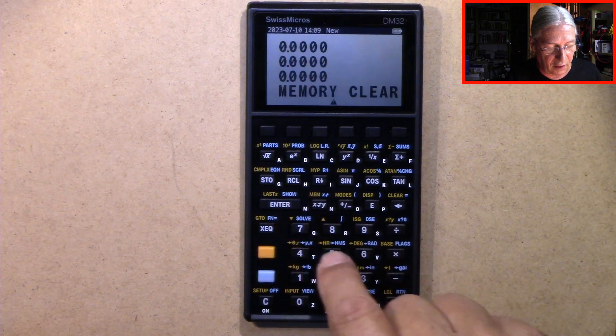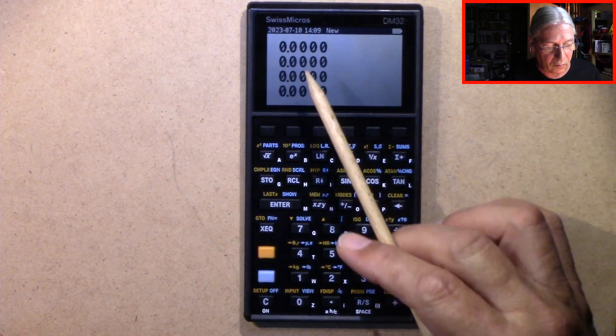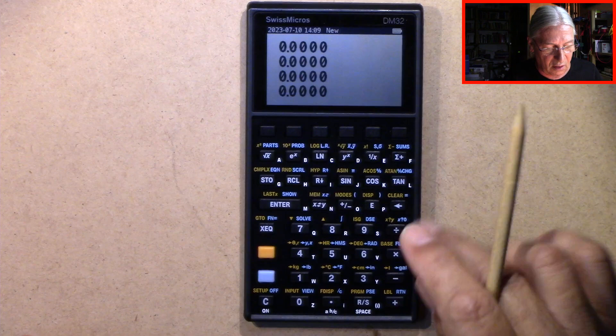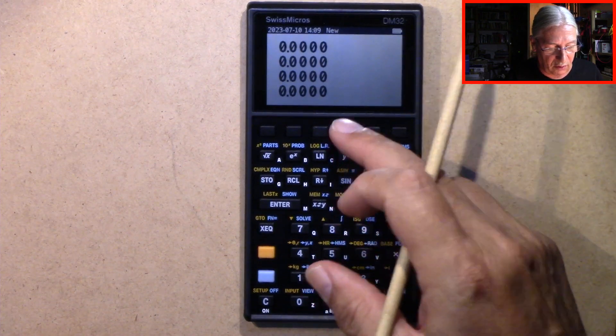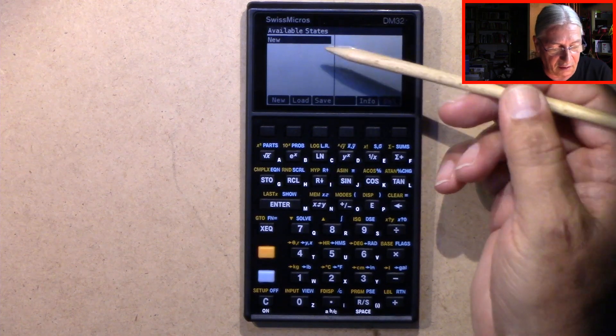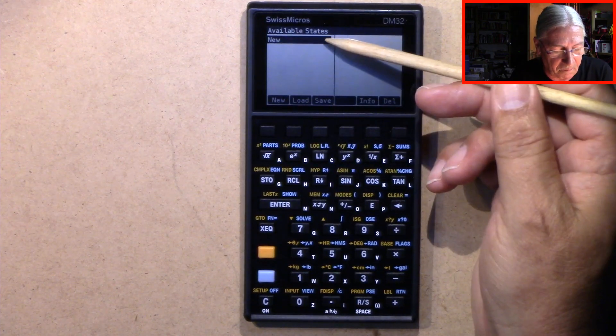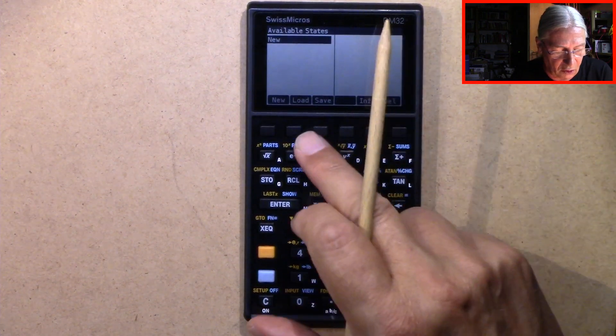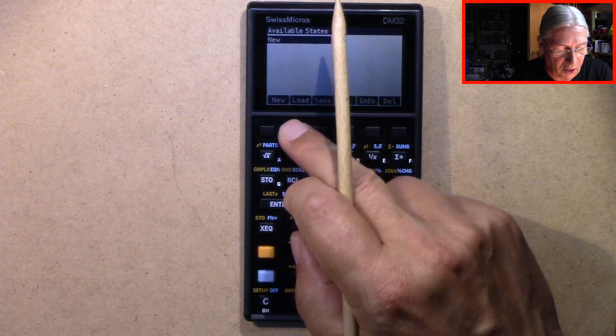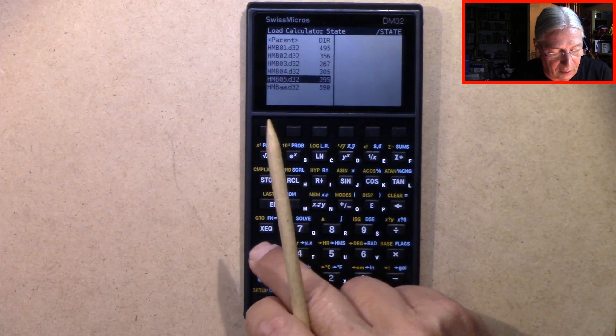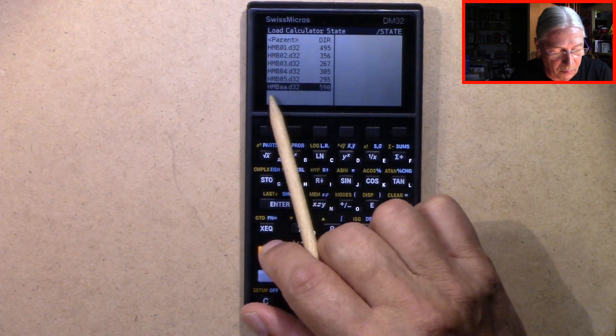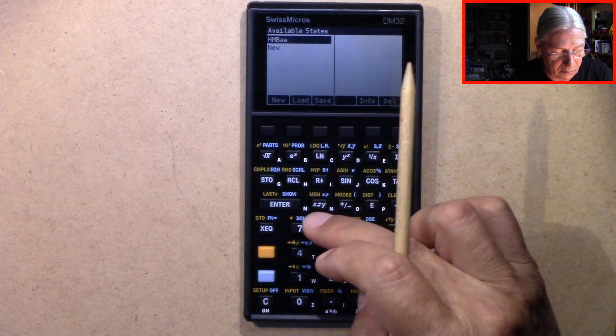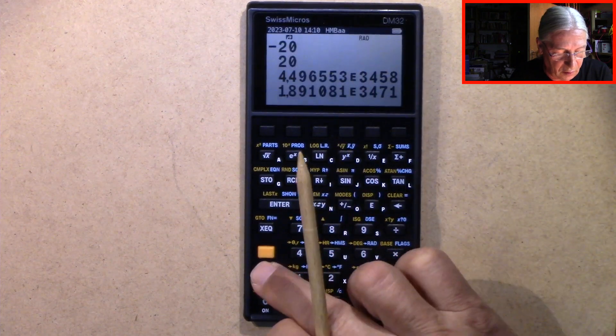Press enter and now you see memory clear and dot as decimal separator. Now I go back to the F4 menu and the available states are also overwritten by the new profile. But no problem at all, I can use the load command and get back my HMBAA file. Now we have it here.